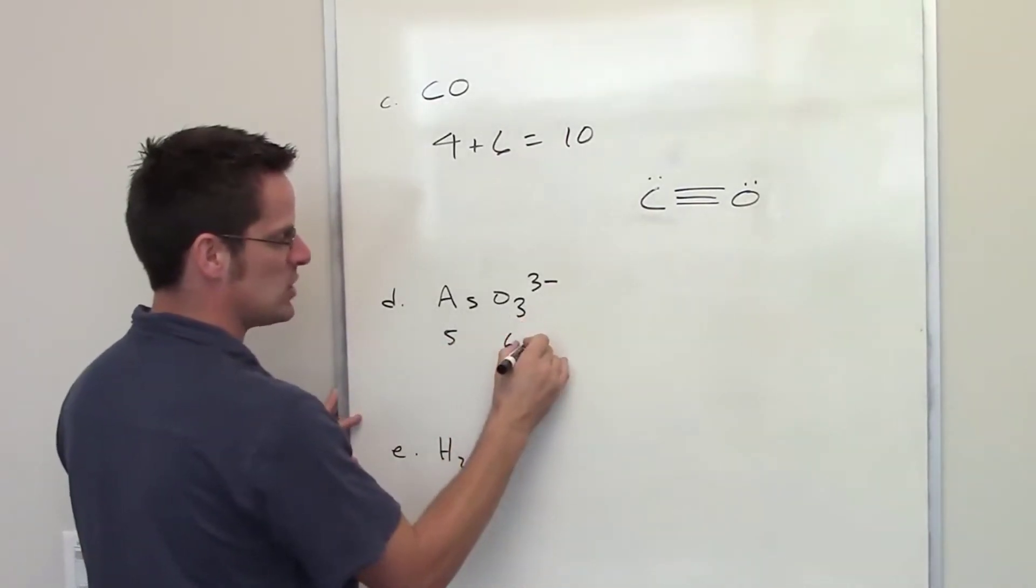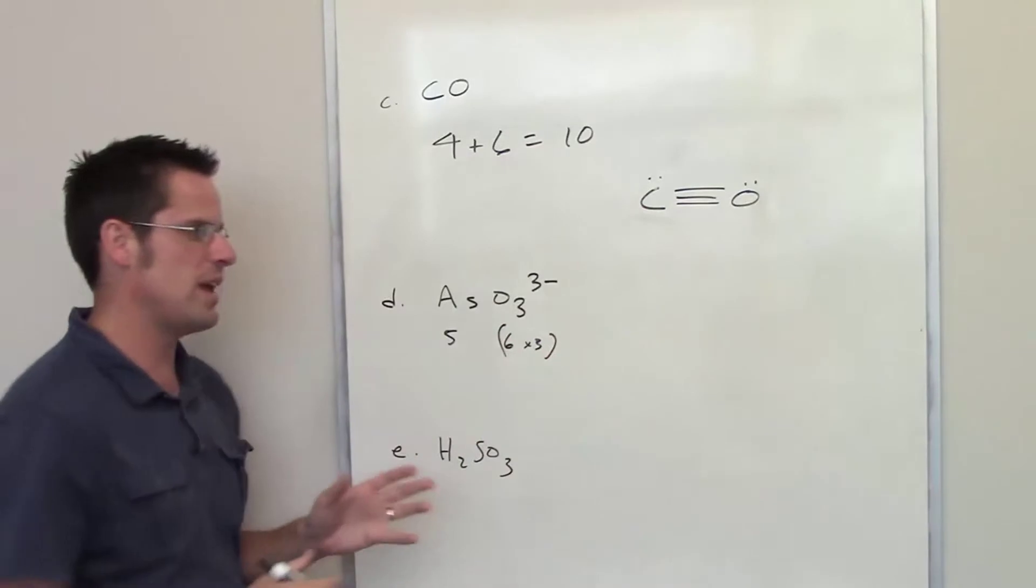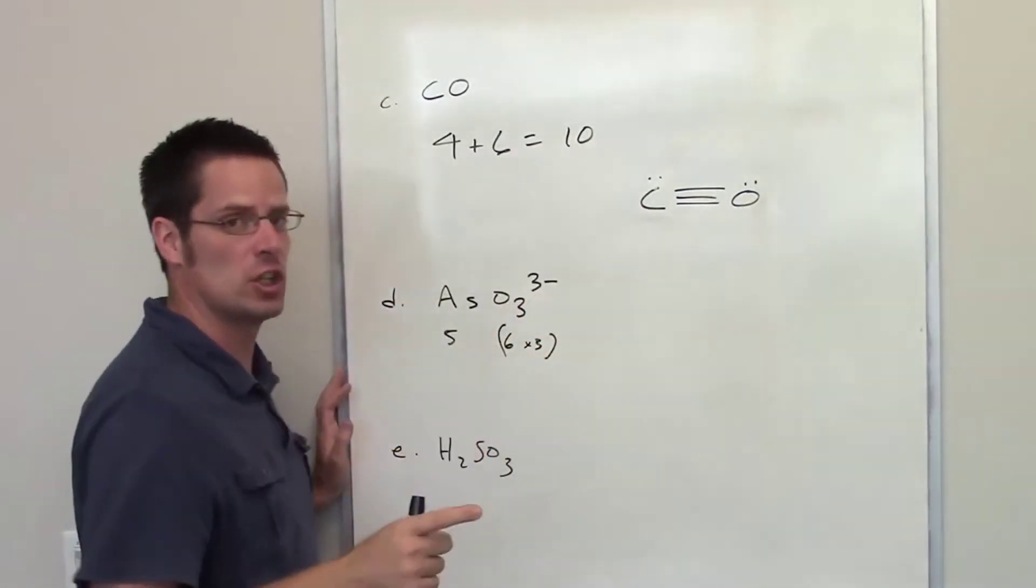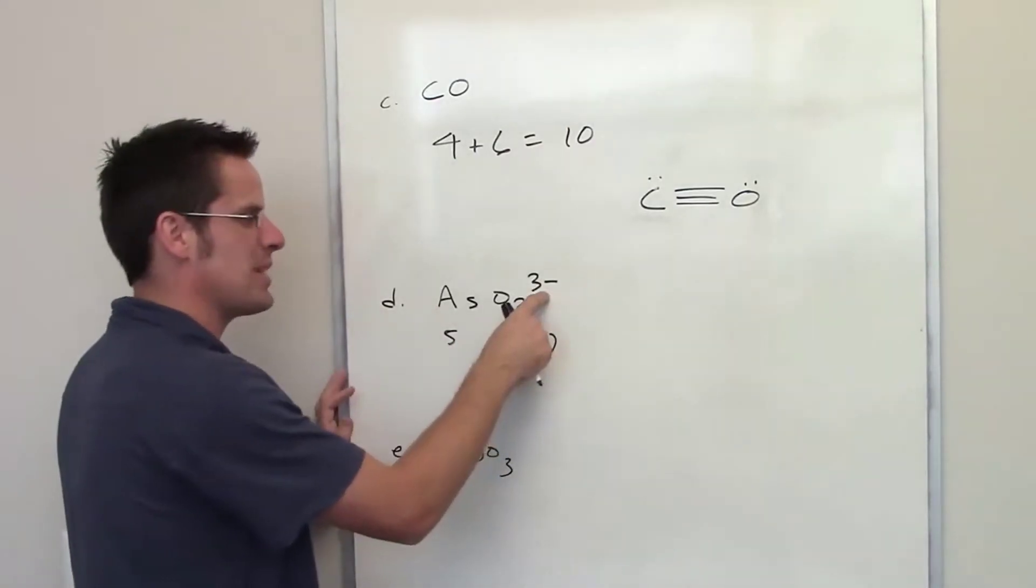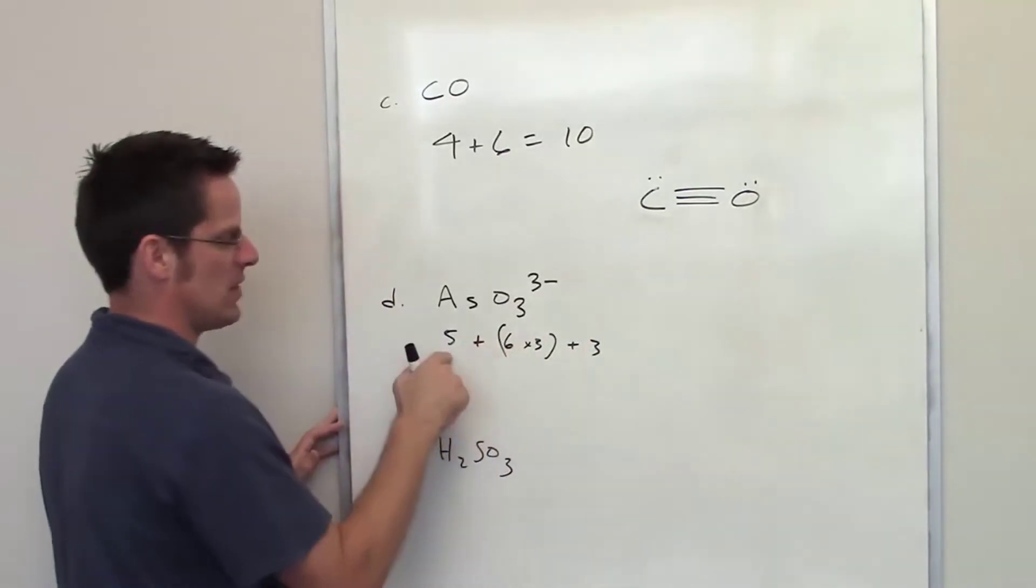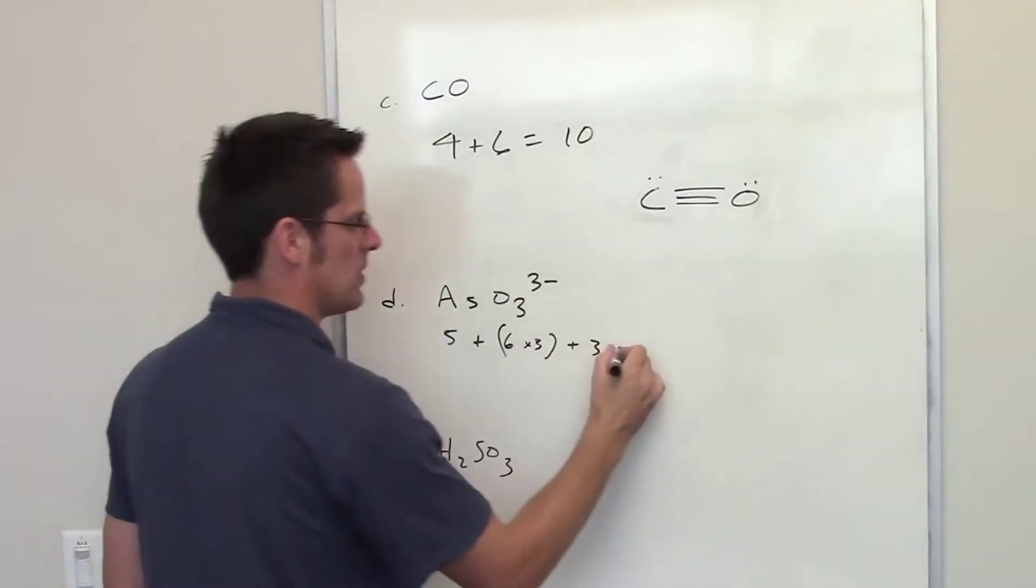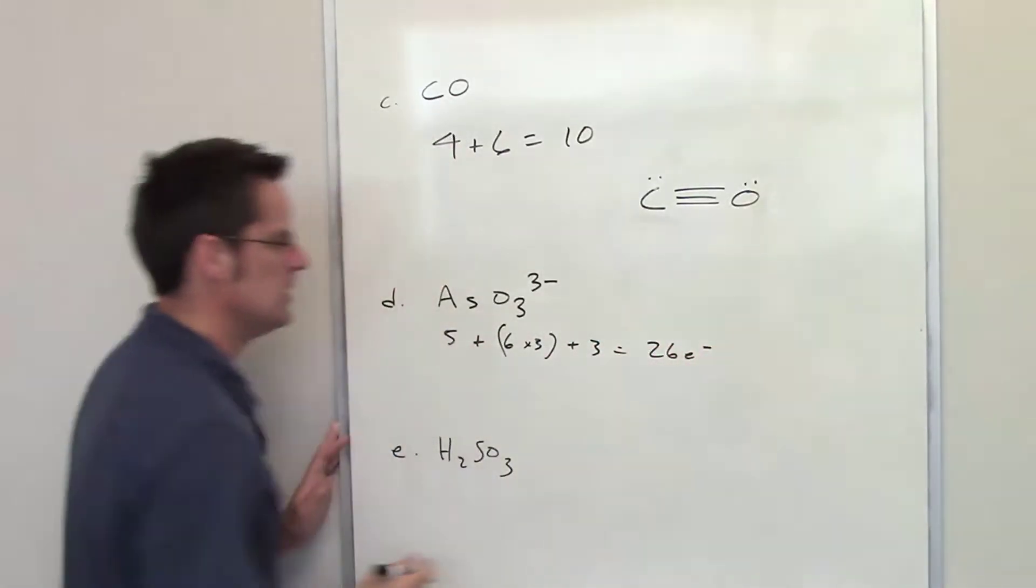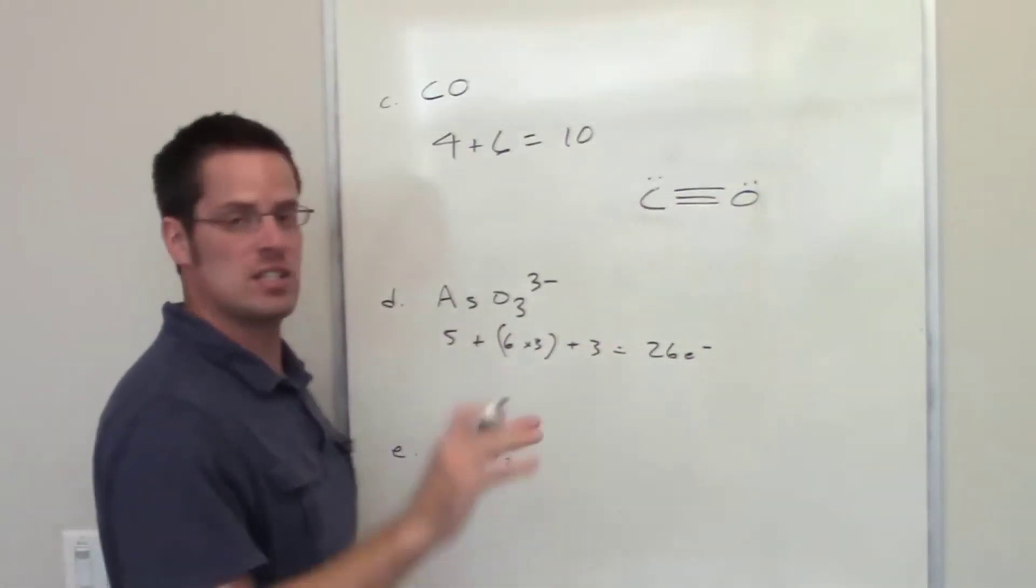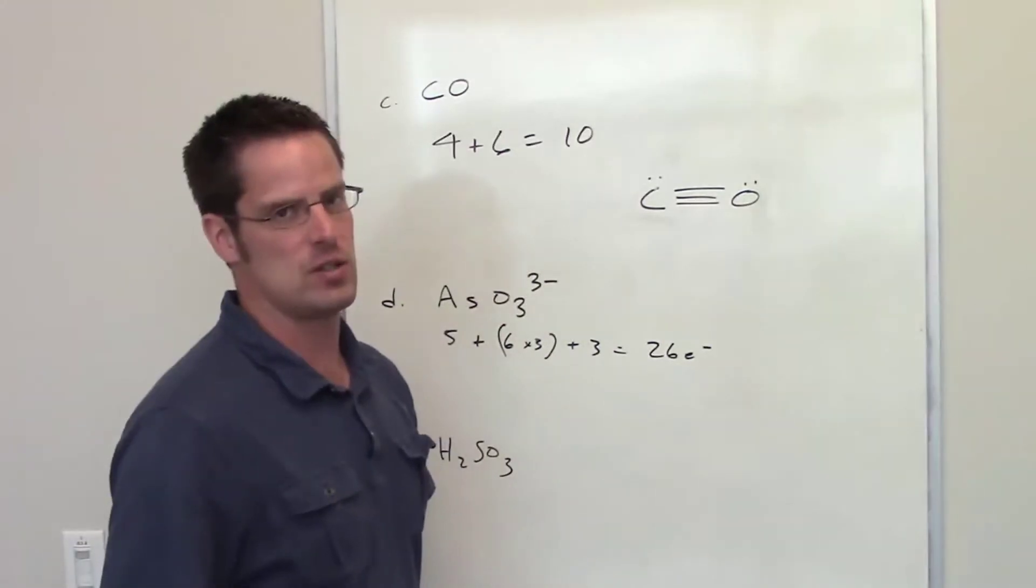and there are three individual oxygens, so I have six valence electrons from each of those three all being brought to the table. And then, you'll notice I've got a charge. That charge represents three extra electrons added to the system. So I add that all together. I've got 5 plus 18 plus 3 is 26 electrons. So now I've got 26 total electrons.